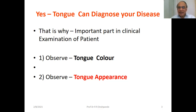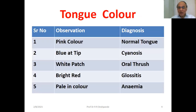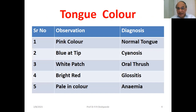The tongue can diagnose your disease — that is why tongue examination is an important part of the clinical examination of a patient. You can observe the tongue color and appearance. If the color of the tongue is pink, that is absolutely normal.